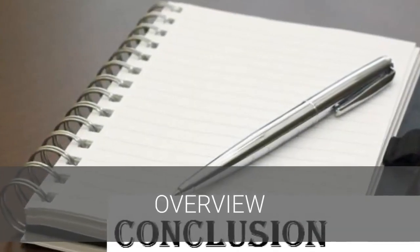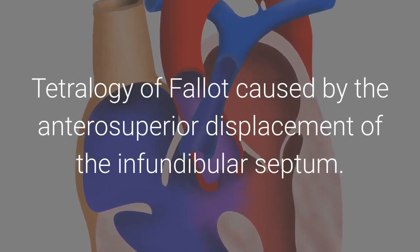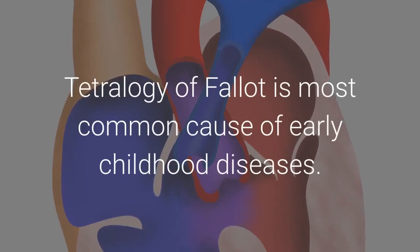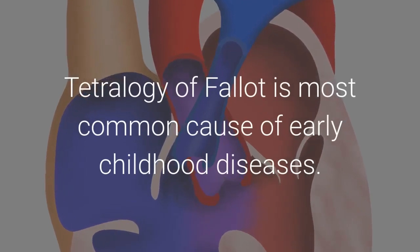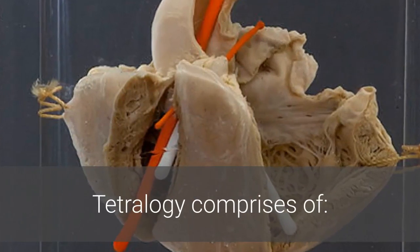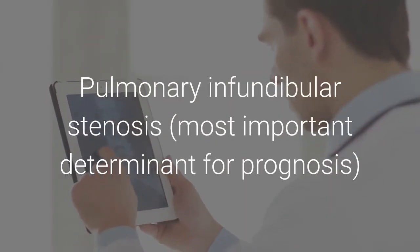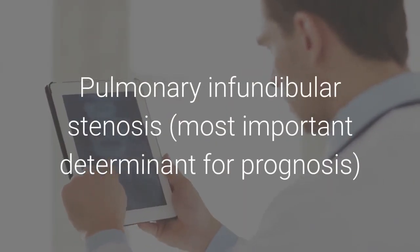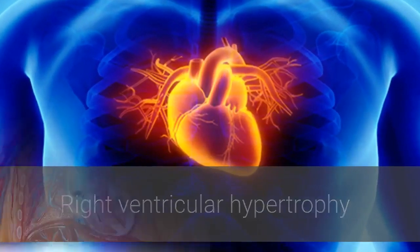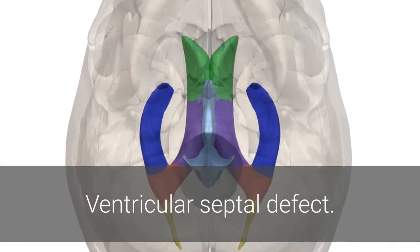Overview: Tetralogy of Fallot is caused by the anterosuperior displacement of the infundibular septum and is the most common cause of early childhood cyanotic heart disease. Tetralogy comprises: pulmonary infundibular stenosis (the most important determinant for prognosis), right ventricular hypertrophy, overriding aorta, and ventricular septal defect.